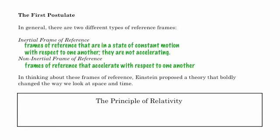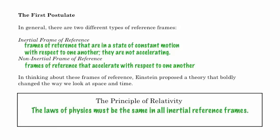In thinking about these two different types of reference frames, Einstein proposed his first theory, called the principle of relativity: the laws of physics must be the same in all inertial reference frames. So the laws of physics have to hold for the people in the truck and for the observer on the ground, and everything at the end has to add up and agree.